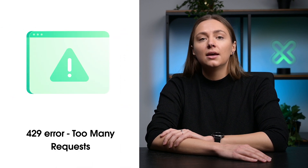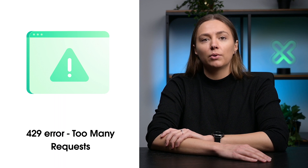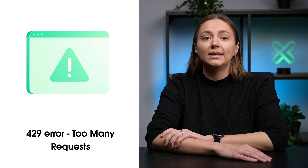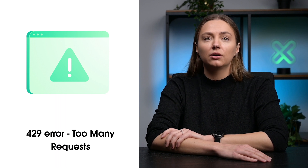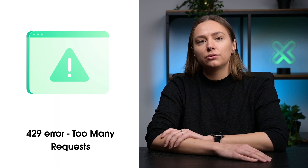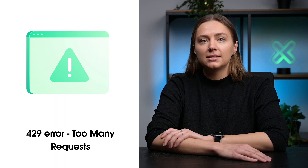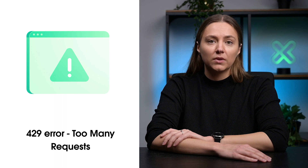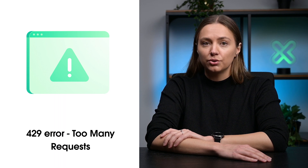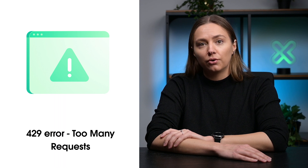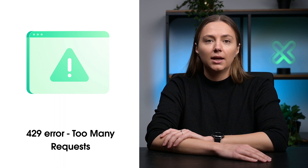The 429 proxy error occurs when a client is sending too many requests within a limited amount of time using the same IP. This way, a web server considers you a bot and restricts access. To fix this proxy error, you should rotate your IP address and set time delays between requests. Also, some proxy providers use the 429 status code to rate limit the customer before reaching the web server, which may be determined by the proxy provider's terms and conditions.